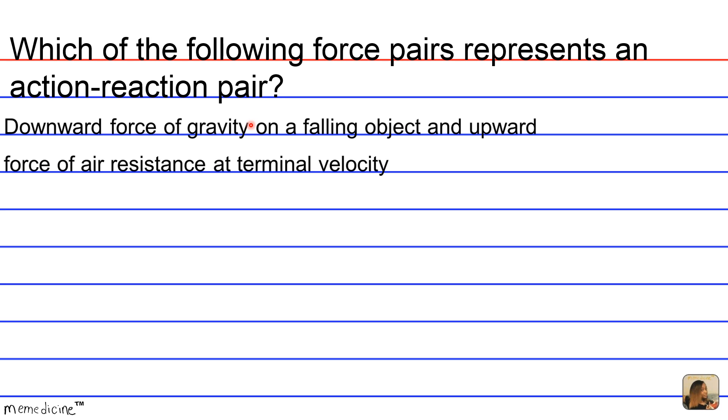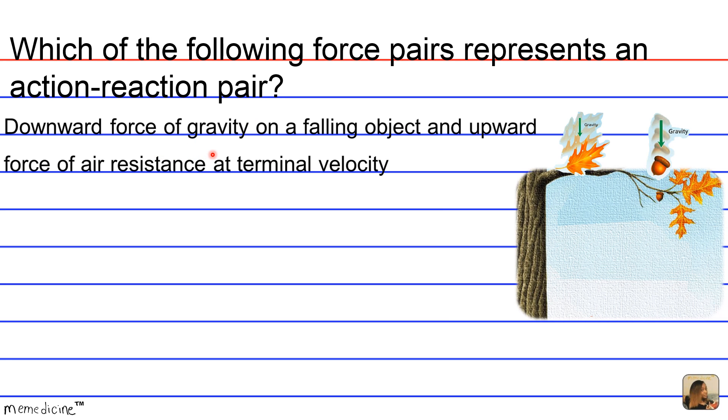Is it A, the downward force of gravity on a falling object and the force of air resistance upward at terminal velocity?